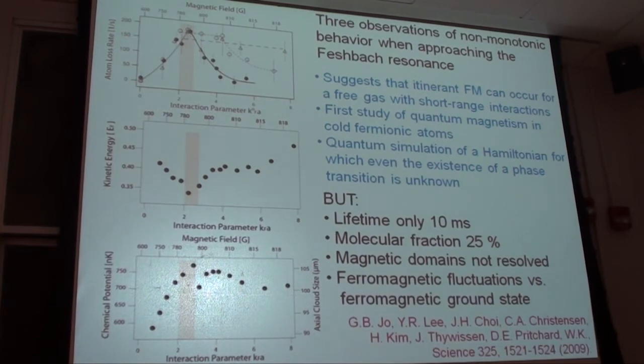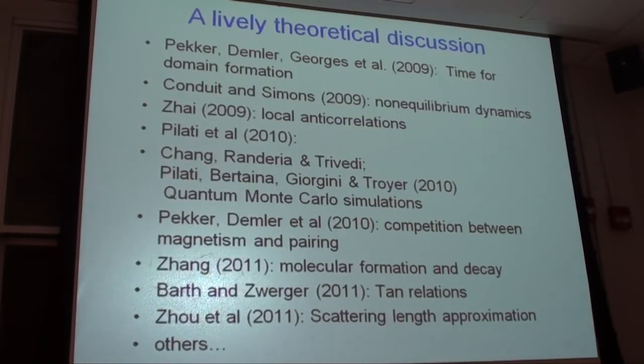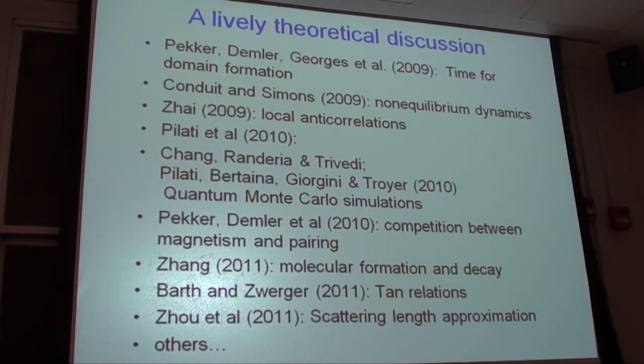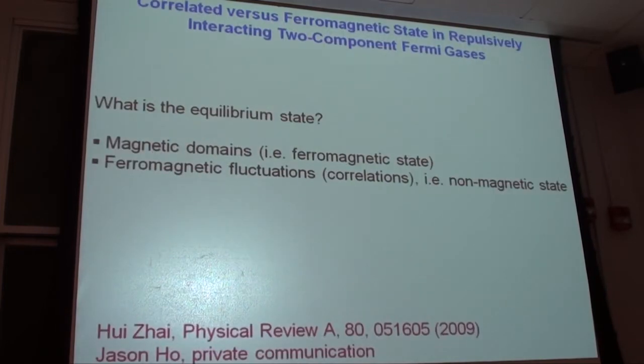However, we could never see the magnetic domains, we thought due to lack of resolution, but it was clear that we didn't see the smoking gun of the ferromagnetic behavior. This paper triggered lively theoretical discussions. Suddenly, fermions with short-range repulsive interactions were on the map for many body physicists. And some of them questioned correctly, and I agreed with them, that our experiments had not shown that there is a ferromagnetic state.